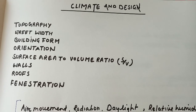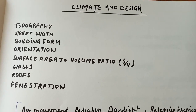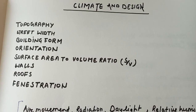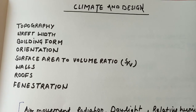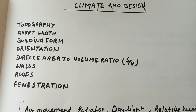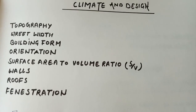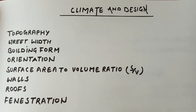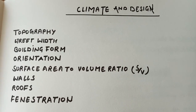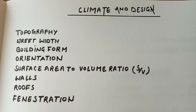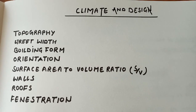The first terms are topography, street width, building form orientation and surface area, volume ratio, wall, roof, and fenestration.